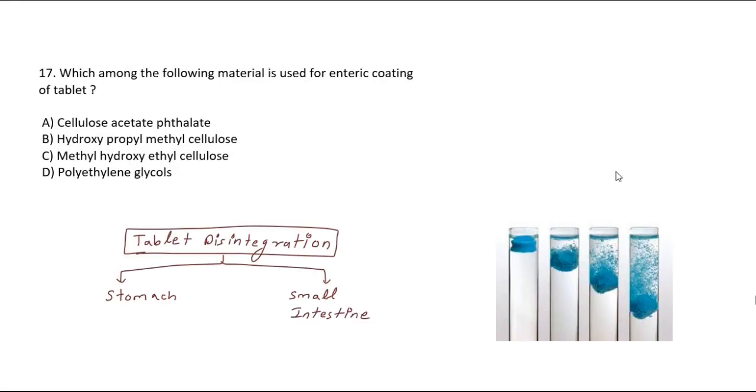Which of the following material is used for enteric coating of tablet? Options are Cellulose Acetate Phthalate, Hydroxypropyl Methyl Cellulose, Methyl Hydroxy Ethyl Cellulose, or Polyethylene Glycol. The answer is Cellulose Acetate Phthalate.